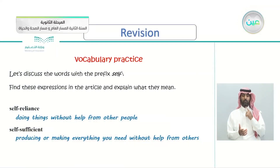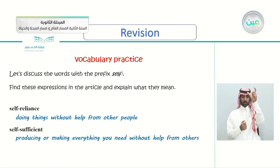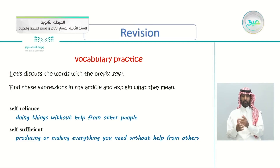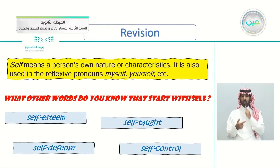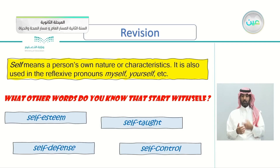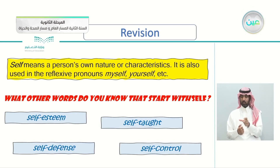From the previous vocabulary practice, the word 'self': self-reliance means doing things without help from other people; self-sufficient means producing or making everything you need without help from others. 'Self' refers to a person's own nature or characteristics, and is also used in reflexive pronouns like myself or yourself. Examples include self-esteem, self-defense, self-taught, and self-control.